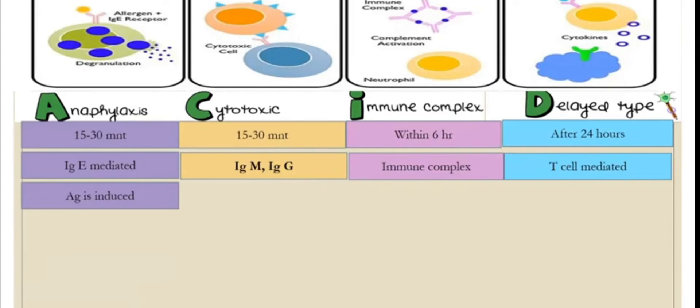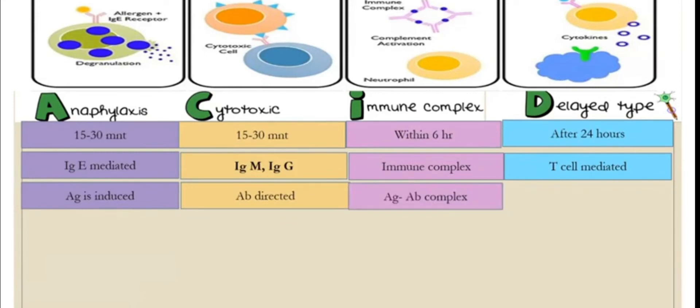To summarize the mechanisms: Type 1 is antigen-induced, Type 2 is antibody-directed, Type 3 involves an antigen-antibody complex — that complex formation is key for immune complex reactions. Type 4 involves sensitized helper T cells that induce cytokines and activate macrophages.